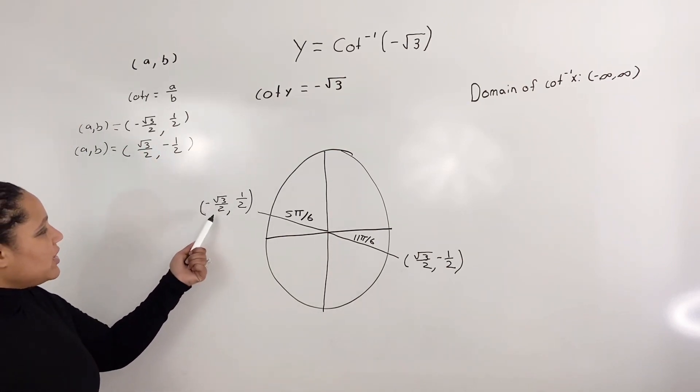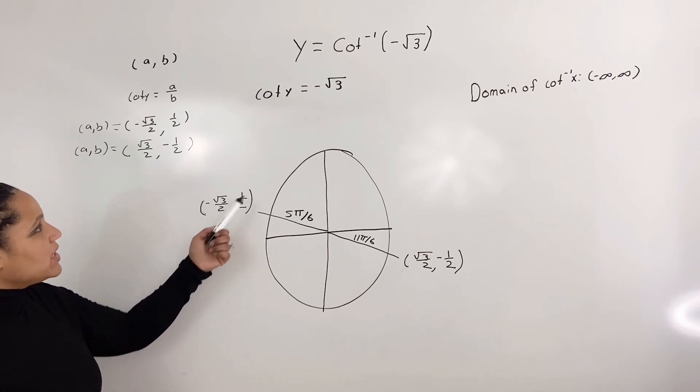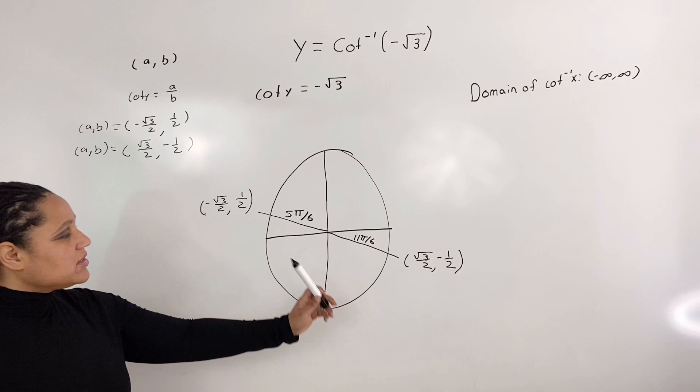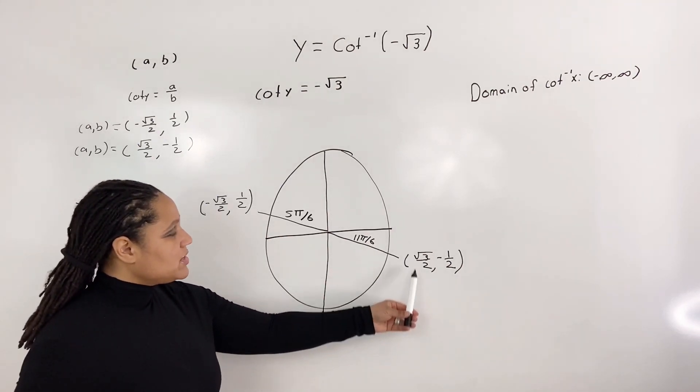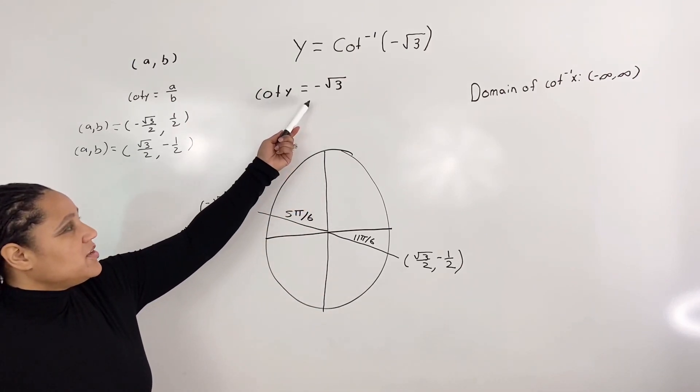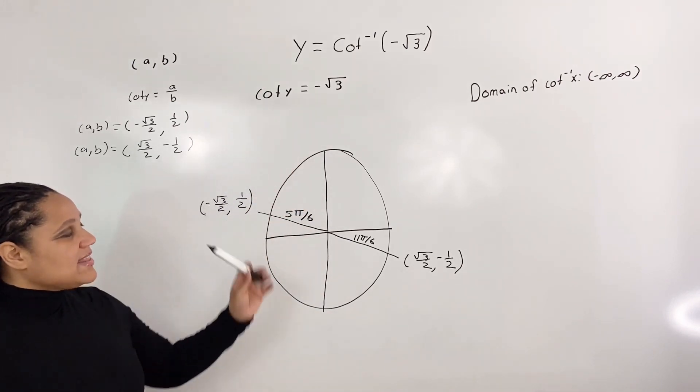Because if we take a divided by b, negative root 3 over 2 divided by 1 half will give us negative root 3. Similarly, if we take root 3 over 2 and divide it by negative 1 half, we get negative root 3. And that's what we want.